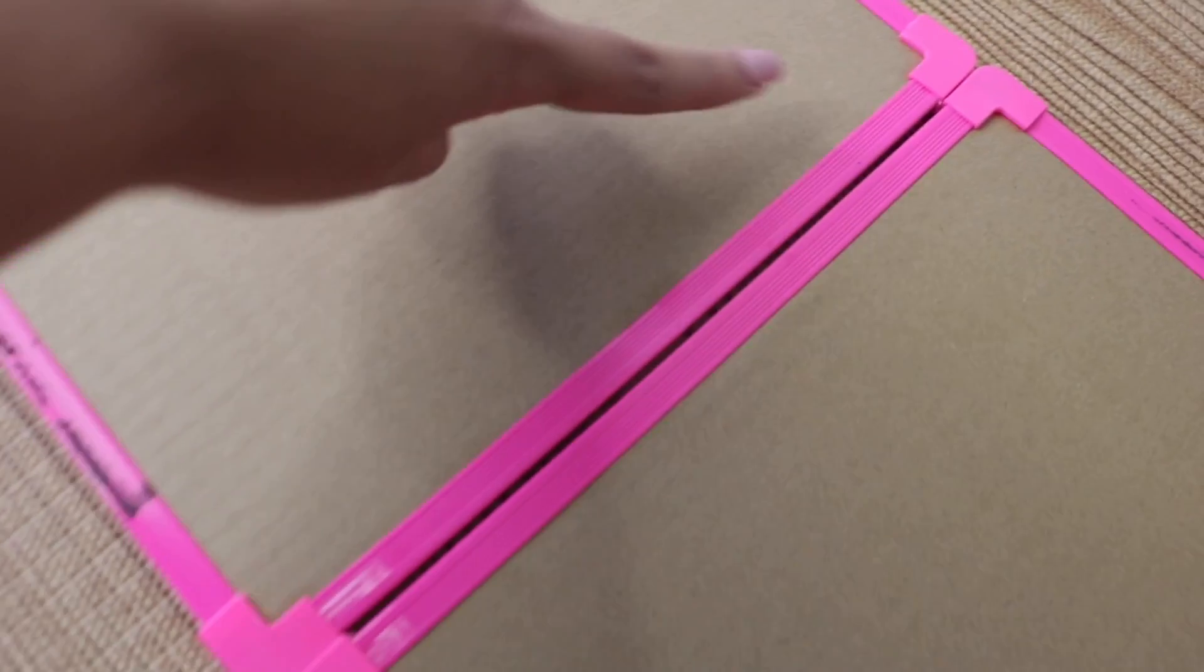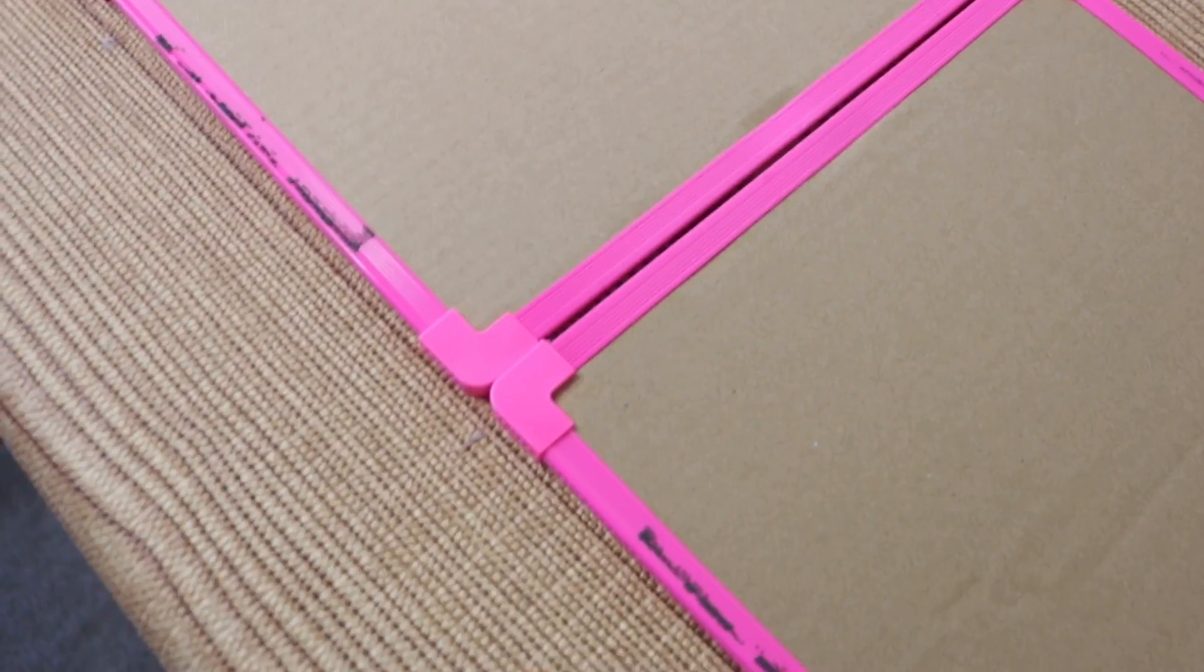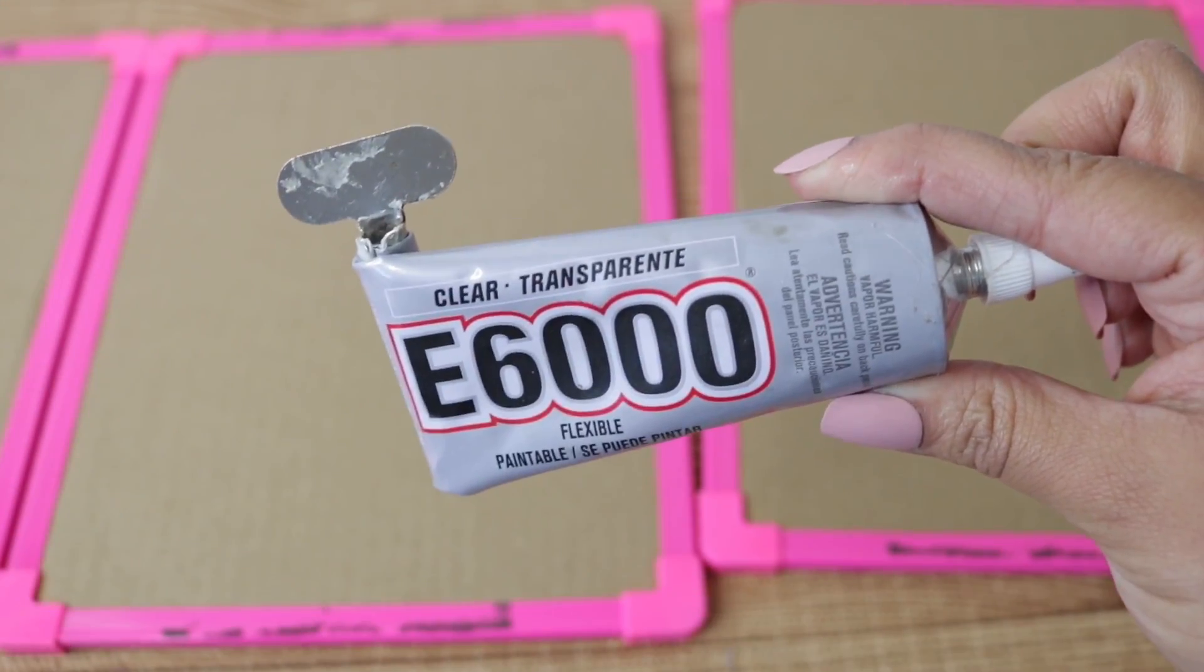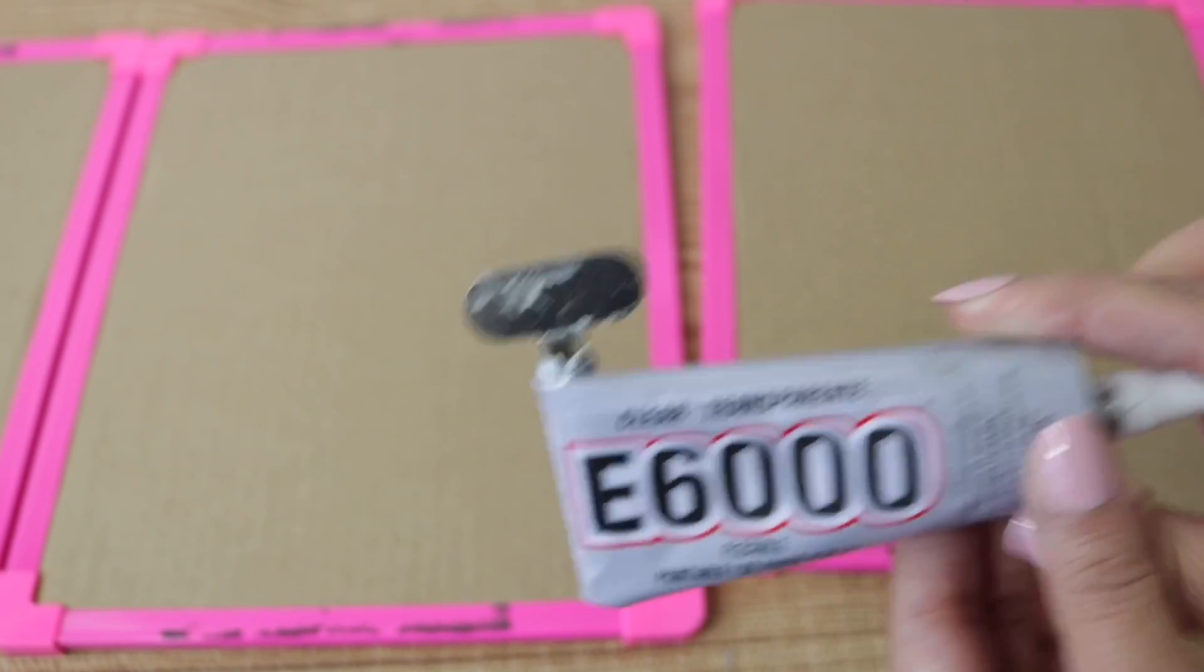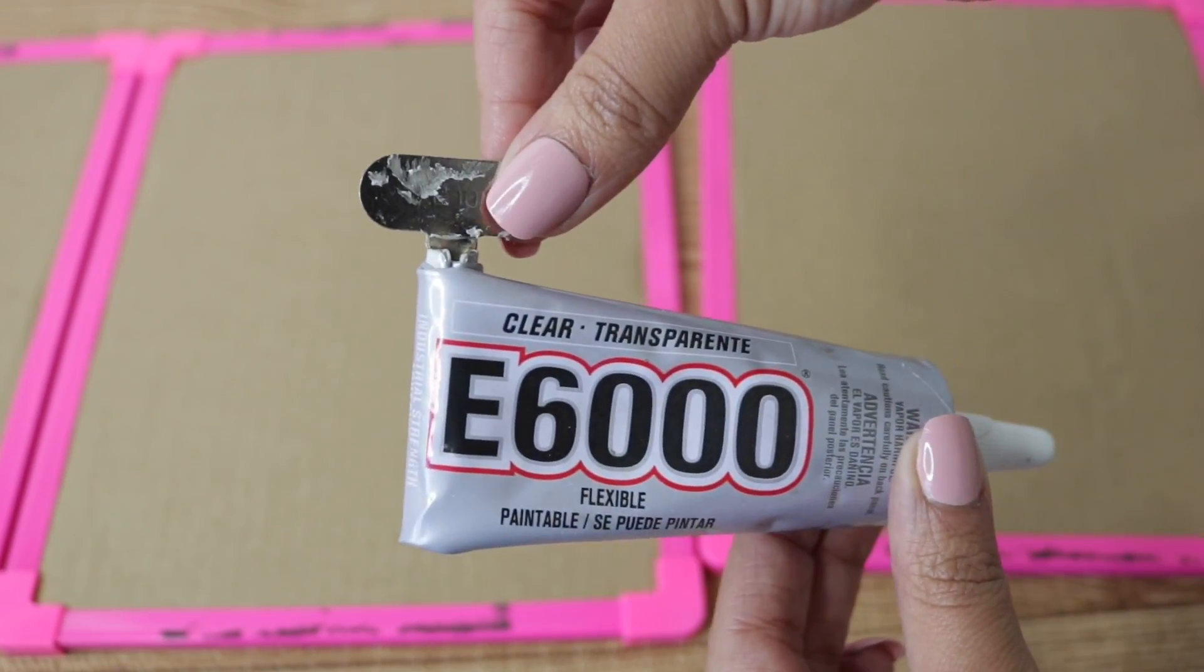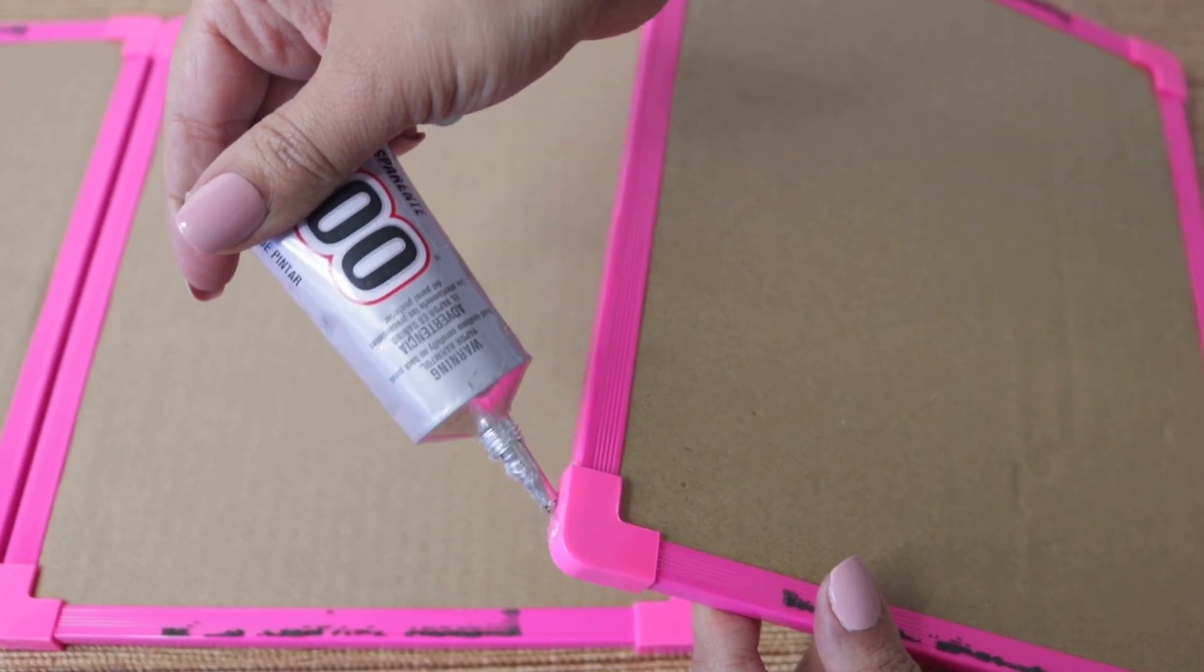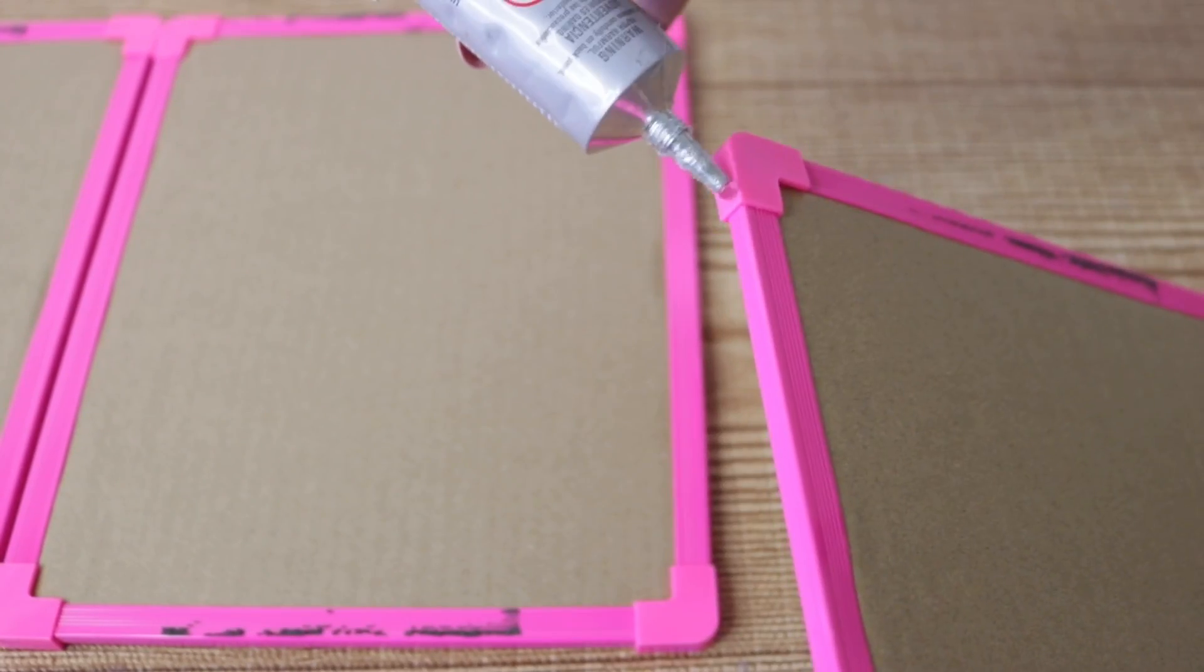For that I'm going to use my E6000 and my key, which I'll link below. I found one on Amazon, but you can also find this at Sally Beauty. I'm going to add a generous amount to both the top and the bottom of this.